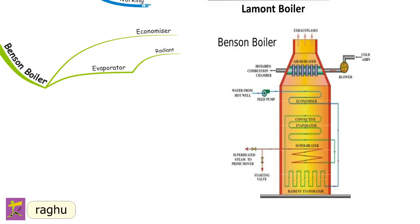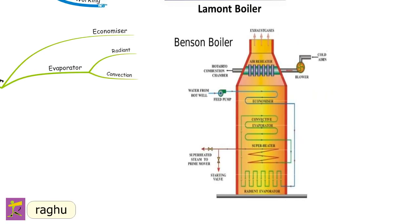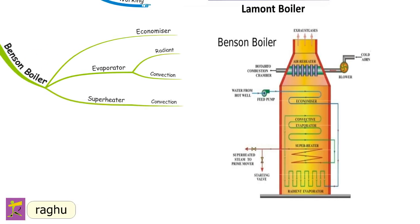In the radiant evaporator, water is partly converted into steam by receiving heat from fuel through radiation. The remaining water from the radiant evaporator is evaporated in the convection evaporator, where heat is absorbed from hot gases by convection, producing saturated high-pressure steam at 210 kgf/cm². The saturated steam is then superheated in the convection superheater, and the superheated steam is supplied to the steam turbine.